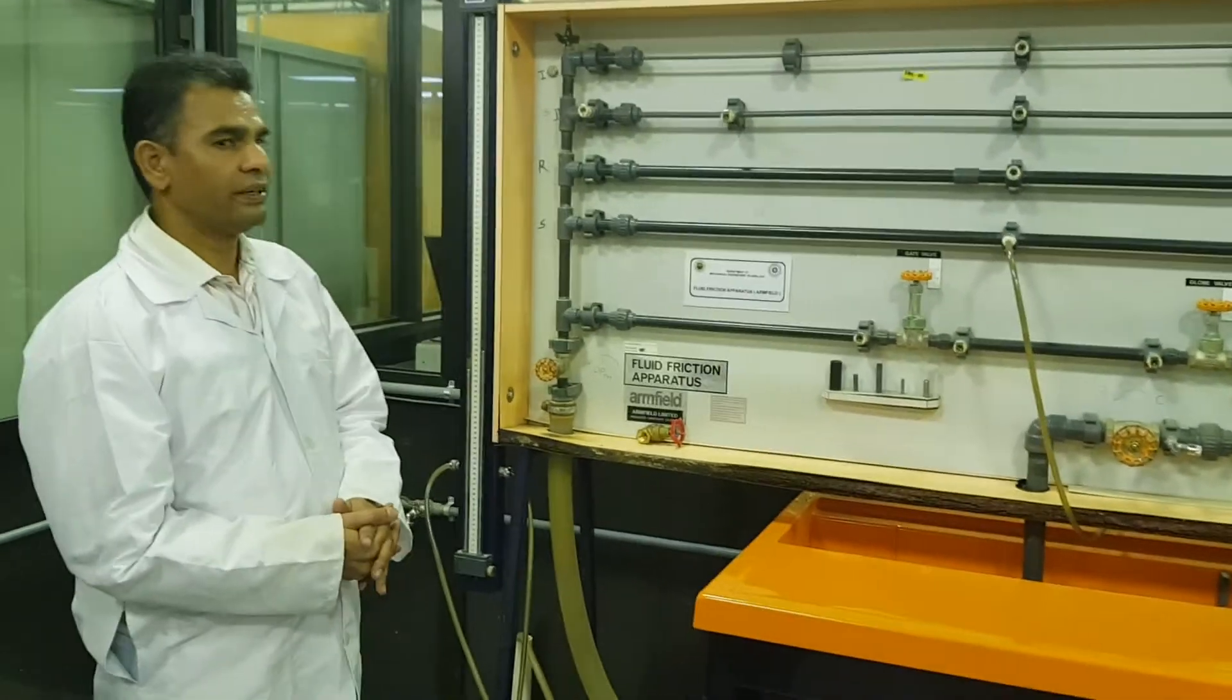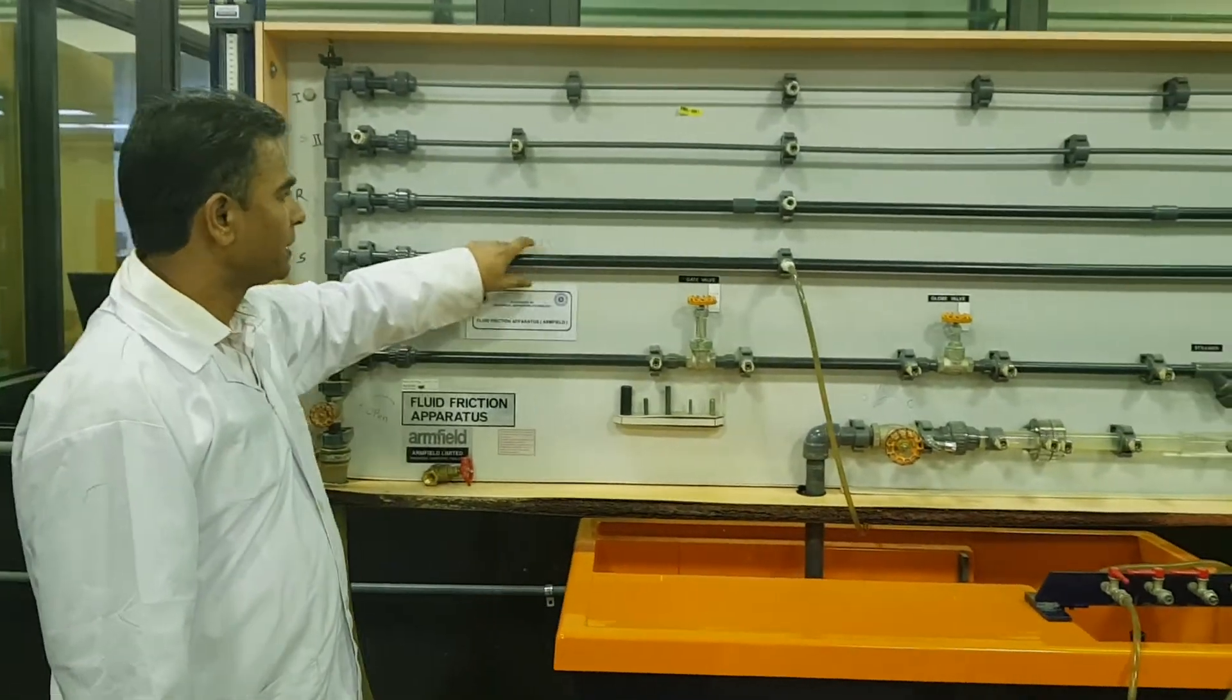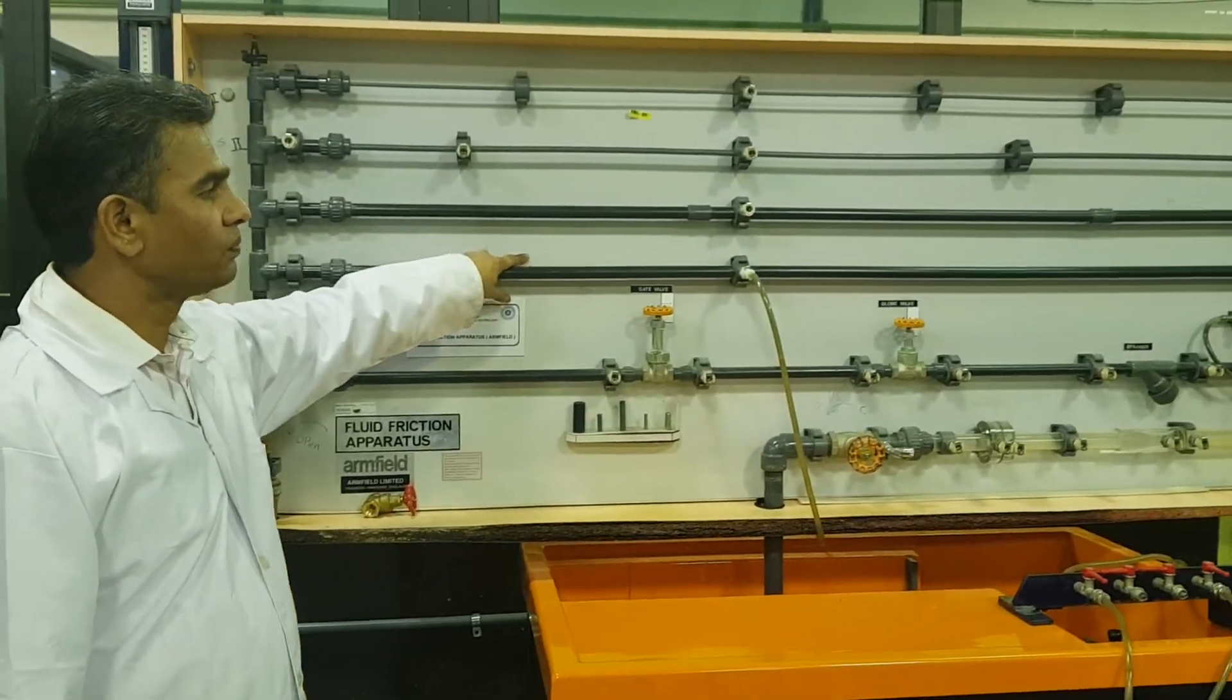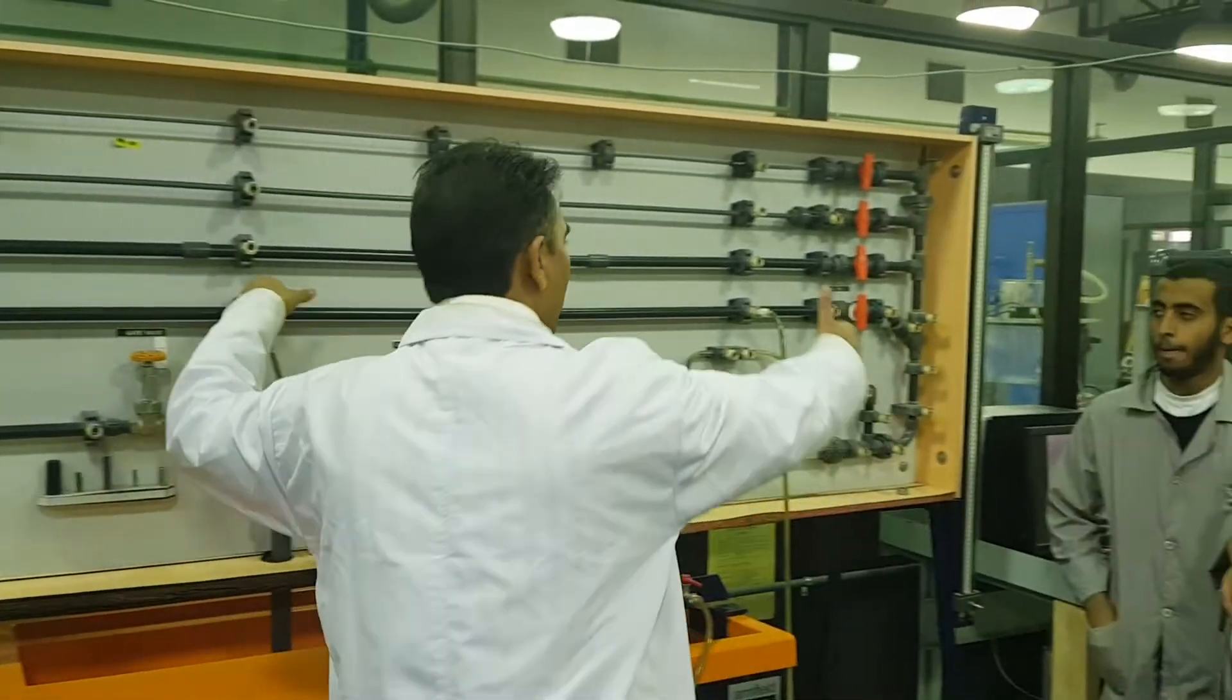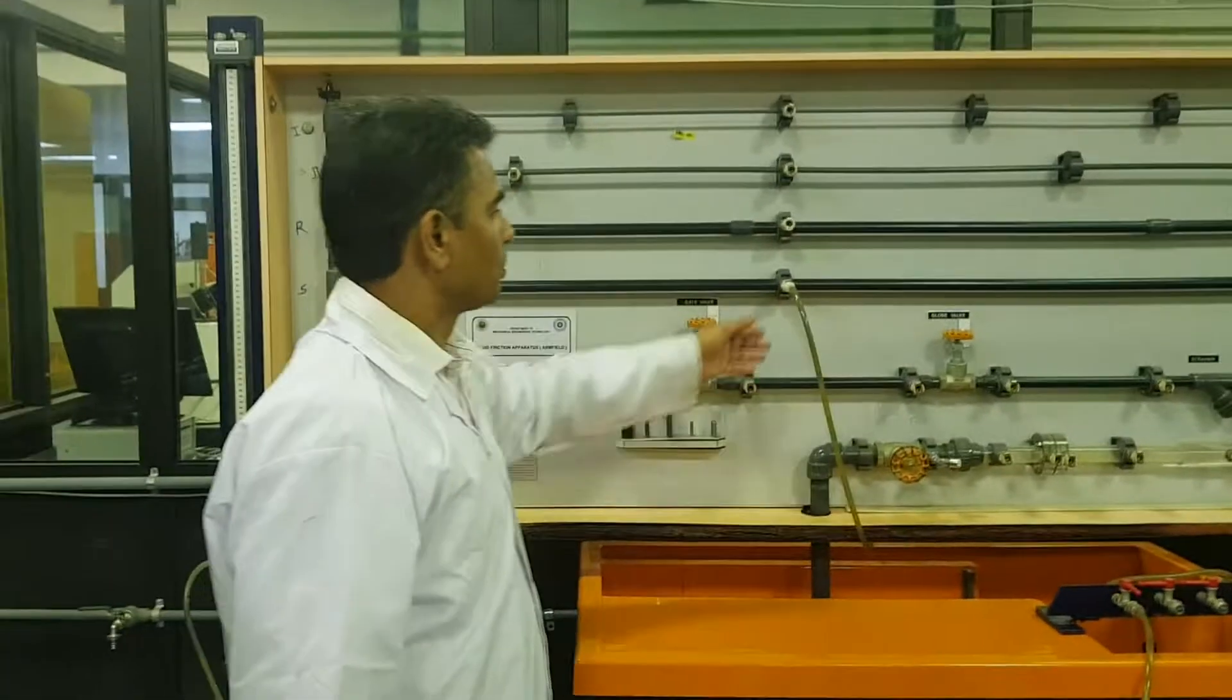How to measure the pressure here for a flow through smooth pipe. So this is a smooth pipe, the diameter of pipe is given to you, the length of the pipe is given to you, 100 centimeter. So there are two taps we can connect the manometer at the two taps.